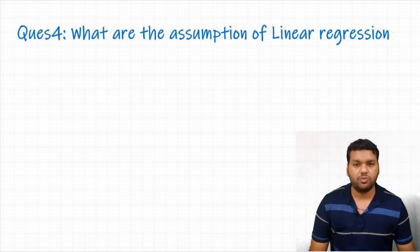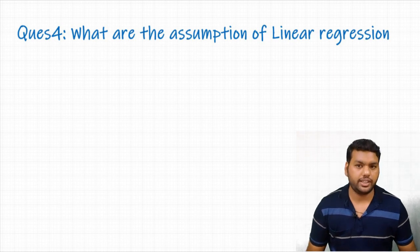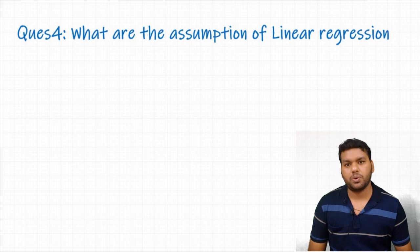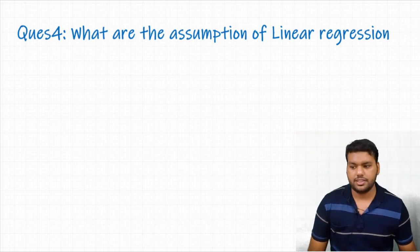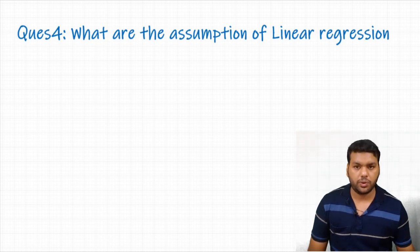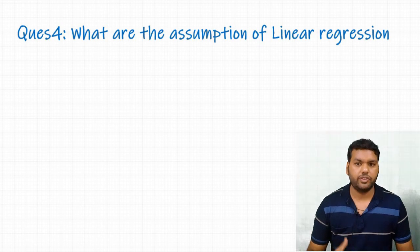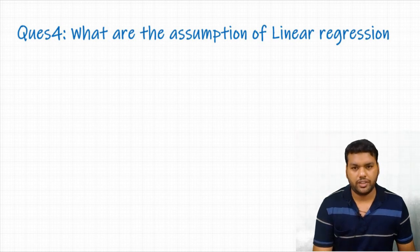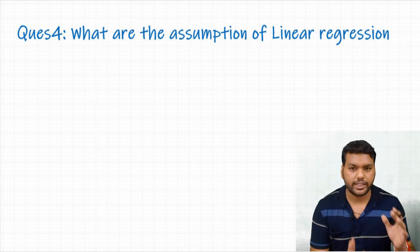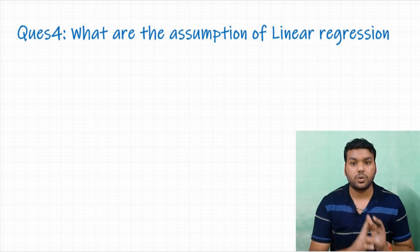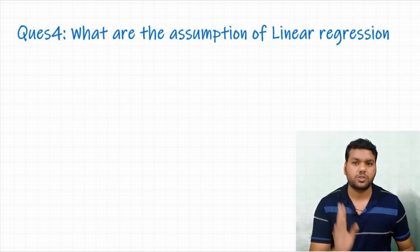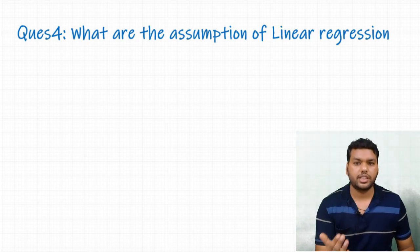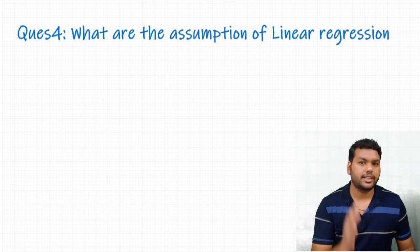The next and most important question: what are the assumptions of linear regression? There are many assumptions. First, the response and predictor should have a linear relationship. Second, the error in linear regression should follow a normal distribution. Third, there is no heteroscedasticity. Fourth, there are no outliers. Fifth, there is no multicollinearity. And the last: the errors are not correlated with each other. The most important ones to mention are linear relationship, no heteroscedasticity, and no multicollinearity.